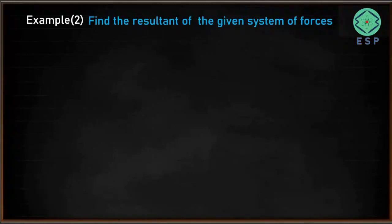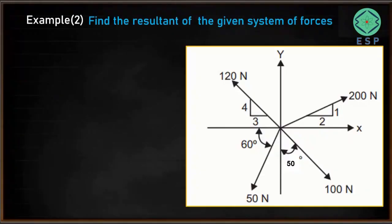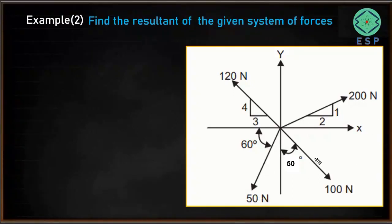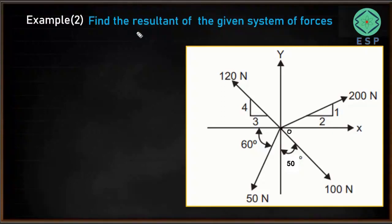Let's consider one more example based on a system of coplanar concurrent forces. Here we have a system of forces acting in the XY plane. We have a force of 200 Newton, another of 120 Newton, 50 Newton, and 100 Newton. All four forces are acting in a single XY plane and pass through a common point O. This is an example of a system of coplanar concurrent forces.